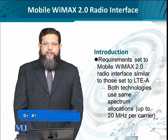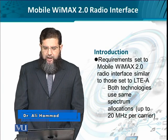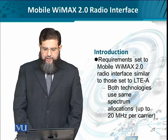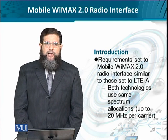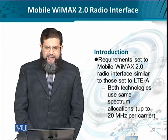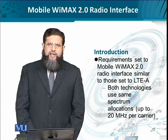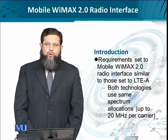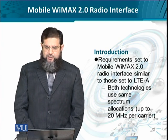The ITU-T IMT requirements as specified in the NGN architecture for Mobile WiMAX 2.0 are quite similar to the requirements put up for LTE-A. That is why the spectrum allocation is again similar: it can start from 1.4 MHz up to 5 MHz in a single chunk within a band, then up to 5 different bands occupying a total of 20 MHz for a single carrier.